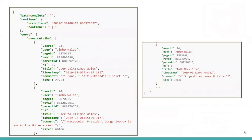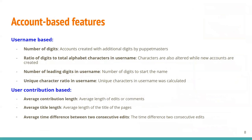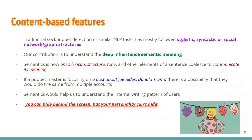To contrast the positively identified sock puppet accounts, we also needed genuine users, selected from a paper by Dr. Kumar et al., and collected data for them through the same process. From all this data, we extracted features such as username-based features like number of digits and number of leading digits in the username, user contribution-based features like average contribution and average title length, and content-based features, which are our main argument in this paper. We aimed to understand deep semantic meaning to help identify internal writing patterns of users, which is essential for detecting accounts operated by the same person.